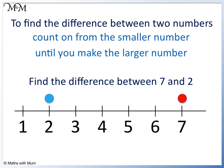We have 1 2 3 4 5 jumps. So the difference is 5.